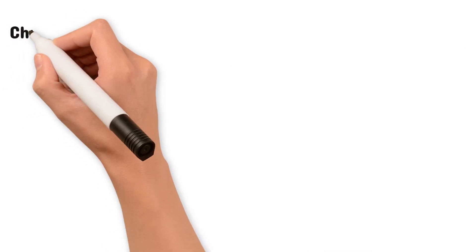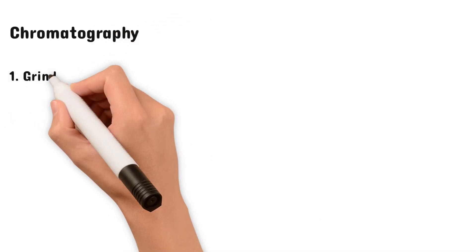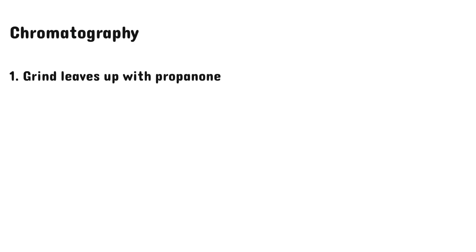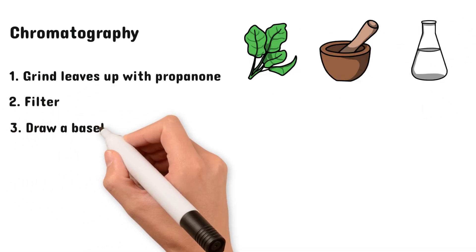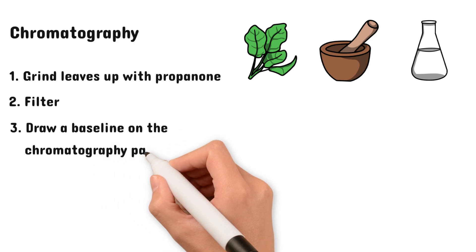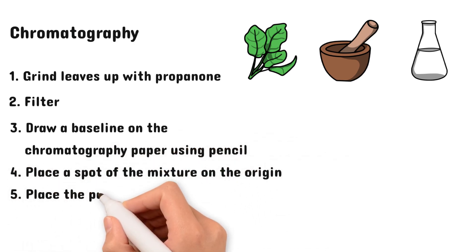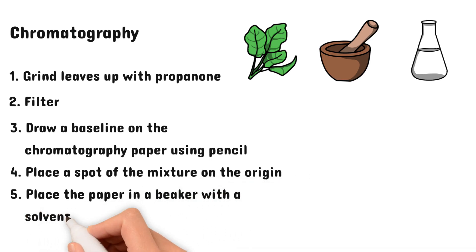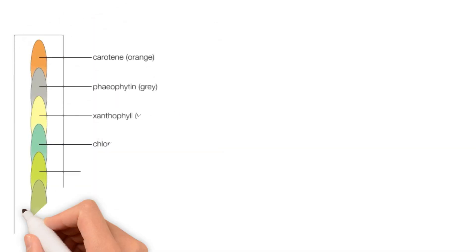We can use chromatography to separate the different pigments that are found in chlorophyll. To do this, first grind up the leaves in propanone, then filter them. Then draw a baseline on the chromatography paper using pencil. Then place a spot of the mixture on the origin, and lastly, place the paper in a beaker with a solvent. Make sure that the solvent is below the baseline and that the setup is as shown in the picture.